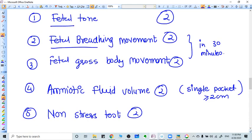Fetal breathing movements, fetal gross body movements, amniotic fluid volume, and non-stress test. Out of these five, four markers we see in ultrasound.